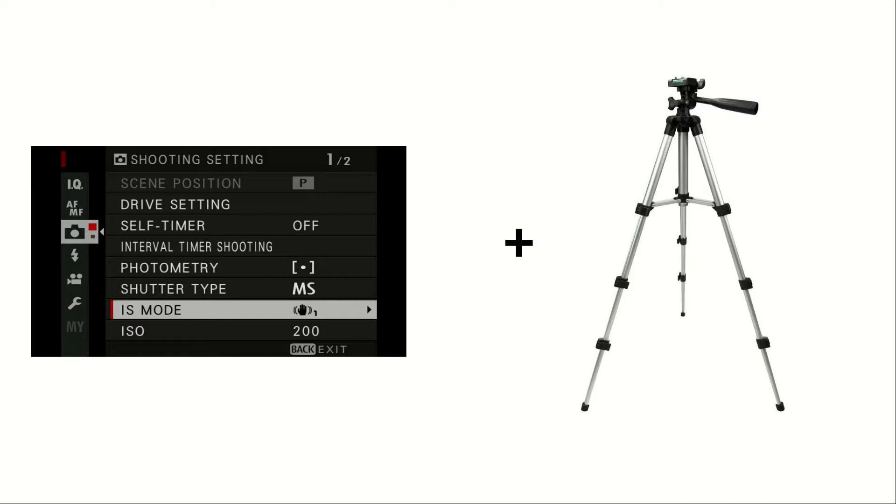Most commonly you are advised against using image stabilization, or IS as I will call it from now on, together with tripod because if the image is not shaking the IS is said to introduce movement. But how true is this? Can we measure it?